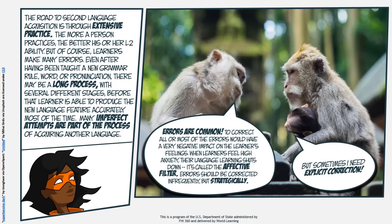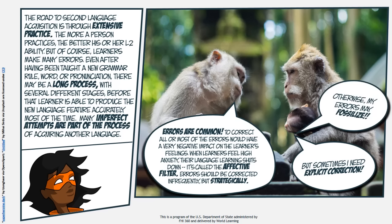Learners sometimes need explicit correction. There are some features of language that can still be easily understood when expressed incorrectly. For example, if someone says, 'I wonder who is she,' they will be understood perfectly, even though Standard English would prefer the form, 'I wonder who she is.' If learners never receive feedback on a consistent error, the form may fossilize in the L2 learner's speech.